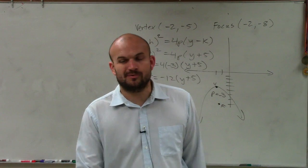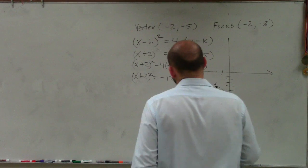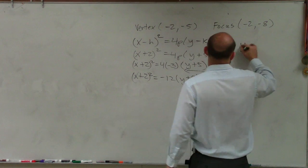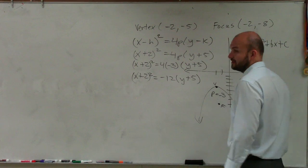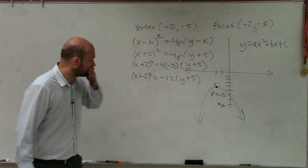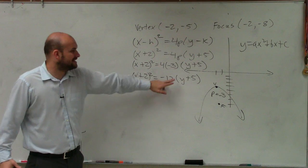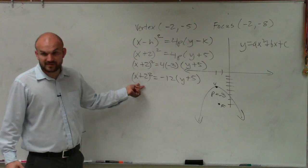But unfortunately, ladies and gentlemen, we're not done. They did ask us to find us in standard form. If you guys remember, standard form looks like this: y equals ax squared plus bx plus c. In this case, luckily, we're solving for y. So it works. So that means what I need to do is I need to get the y by itself. So to do that, I need to first get rid of this binomial squared.